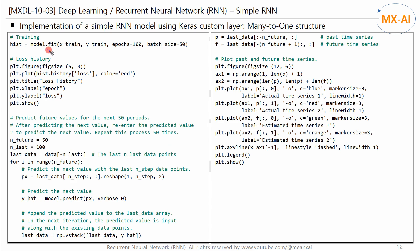Fit this model to the training data with a batch size of 50 and 100 iterations, then visually observe the history of the losses. Next, let's use this model to predict future time series — specifically the next 50 periods. We plot the last 100 periods of the original data, then iterate over 50 periods, predicting the next value using the last N-step data points fed into the model to produce y-hat.